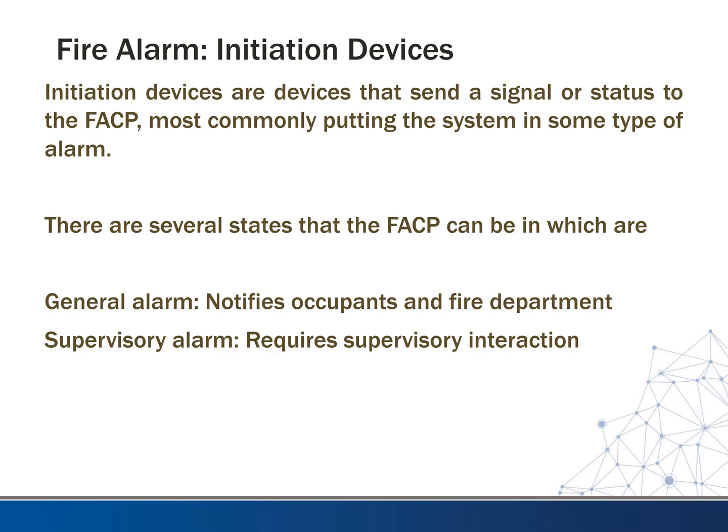If we detect smoke in a guest room, we do not put it in general alarm, but in supervisory alarm. We put an enunciator panel right at the check-in desk, where someone must be present 24 hours a day. They'll see the supervisory alarm and can call up to the room or walk up there to check if there's actually a problem. It could be someone who burned something in the microwave or toaster — we don't want to empty the entire hotel for that. If they see a real problem, they can pull the nearest pull station to put the whole system in general alarm.